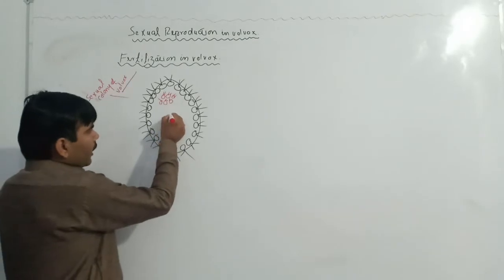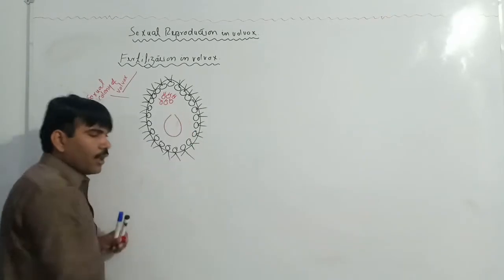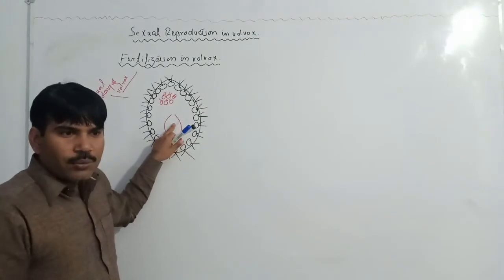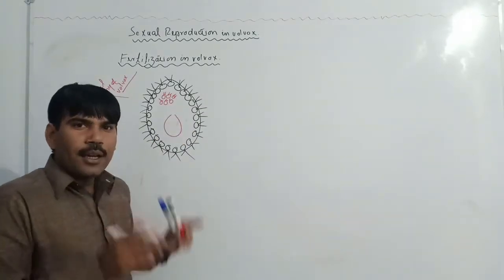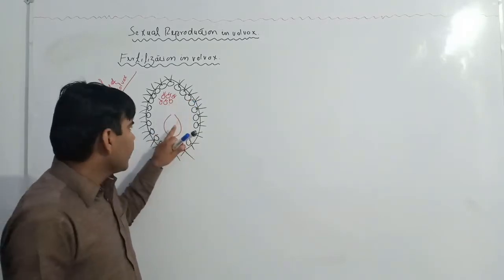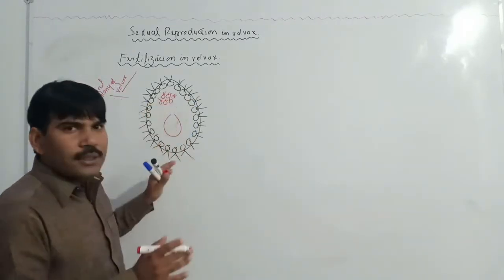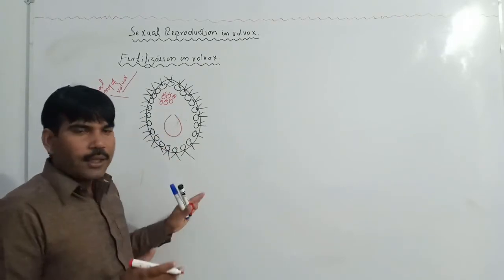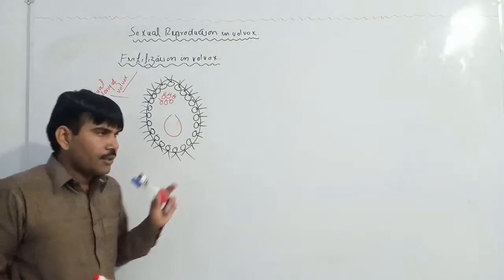Another structure is also present, known as oogonium. In the last lecture we studied the production of antherozytes as well as oogonium. In this lecture we will study how fertilization will occur and what are the stages in the fertilization.